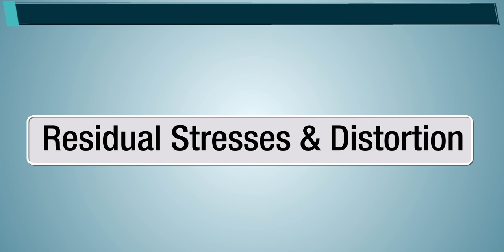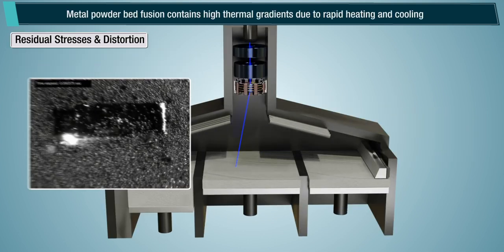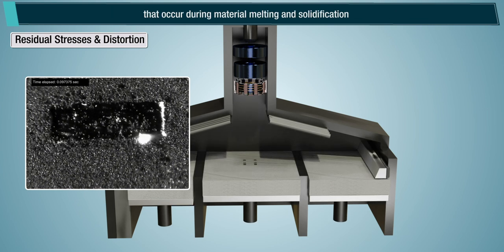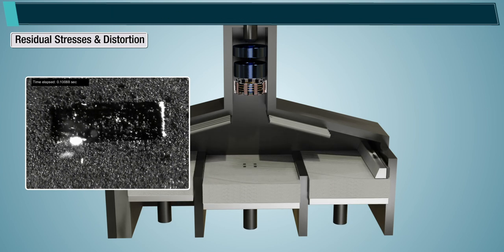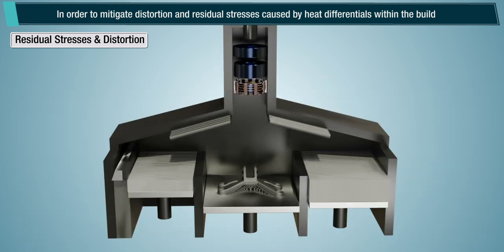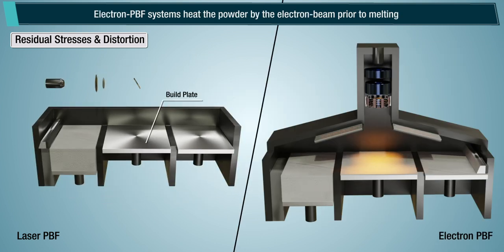Metal powder bed fusion involves high thermal gradients due to rapid heating and cooling that occur during material melting and solidification, resulting in part distortion and residual stresses. To mitigate this, laser powder bed fusion systems use resistive heating of the build plate, whereas electron beam powder bed fusion systems heat the powder using the electron beam prior to melting.